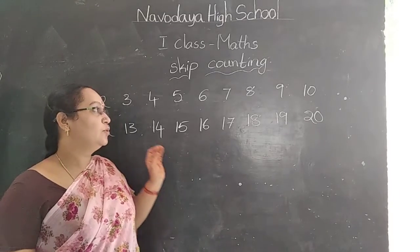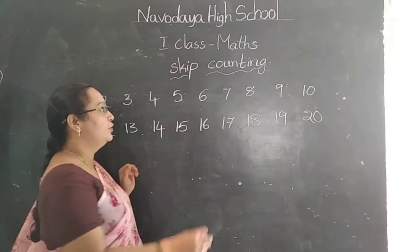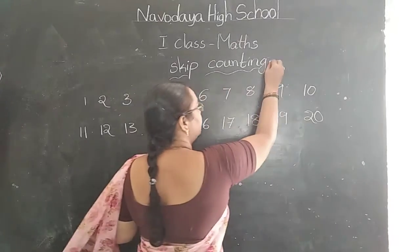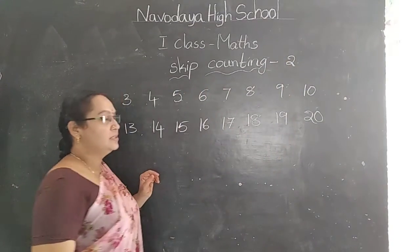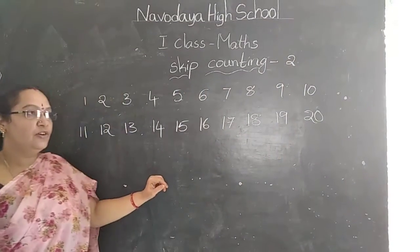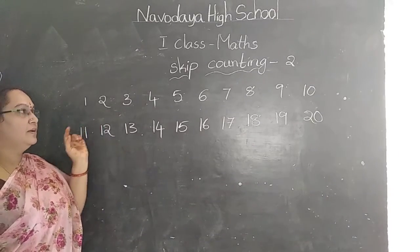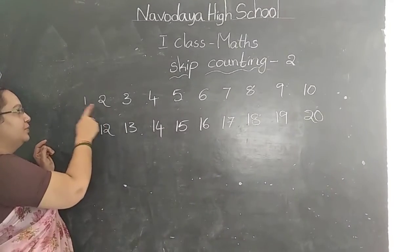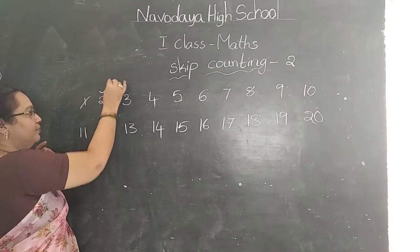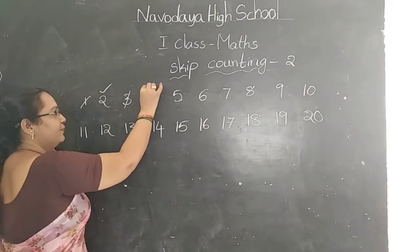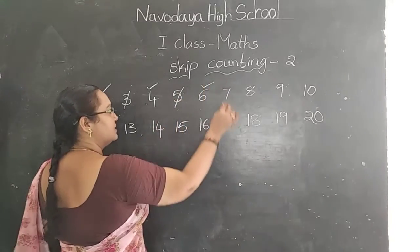First, we are going to learn skip counting of 2. Skip counting of 2 means leave one number and count the next number. 1, 2 — leave one number. 2, next leave 3, 4, leave 5, 6.